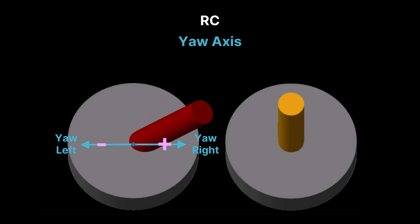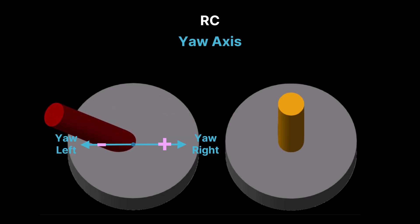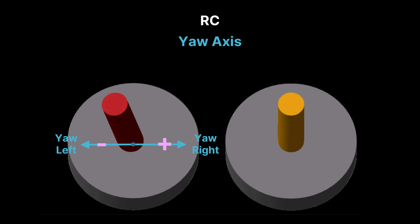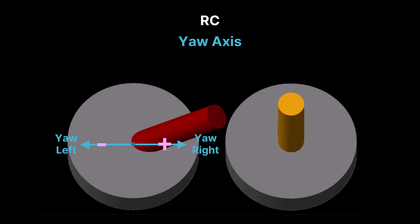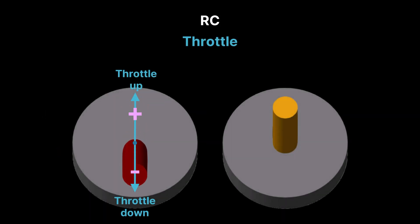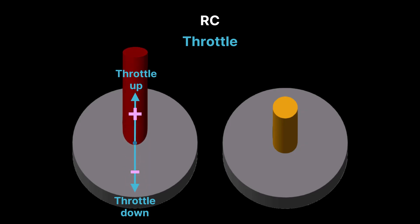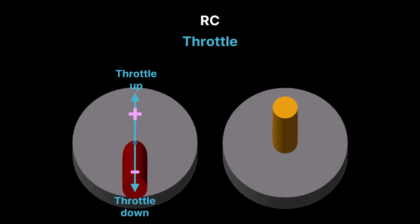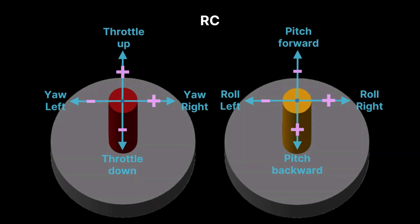The left stick controls the drone's yaw around its vertical axis. Moving the stick right turns the drone right, while moving left turns it left. The left stick also controls the drone's altitude, vertical velocity or acceleration. Pushing up makes the drone ascend, while pulling down makes it descend. Here is a summary of how the RC sticks control the drone's four movement axes.